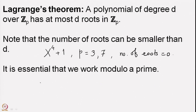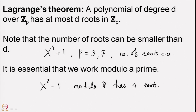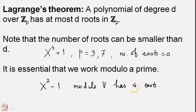Whereas if you do not work modulo a prime, we have seen that x^2 - 1 modulo 8 has 4 roots. The number of roots is 4, which is bigger than the degree D = 2. So to have Lagrange's theorem it is essential that you work modulo a prime and not modulo a composite number.